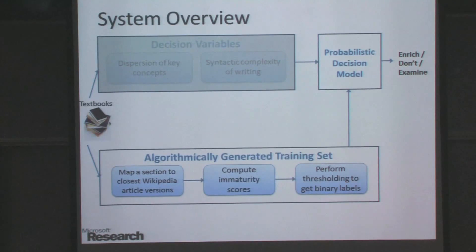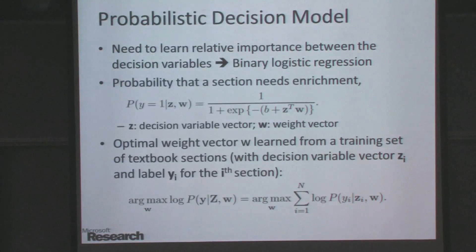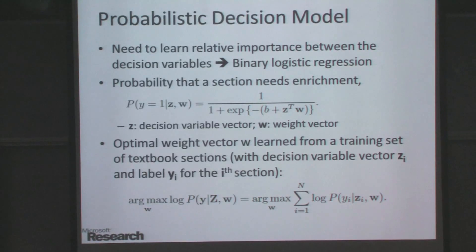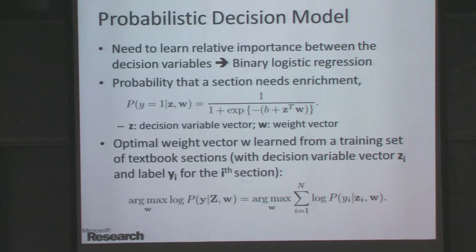Given these two classes of variables, the next question is how to combine them — that's the reason we want to generate training data. We use a standard binary logistic regression to learn the relative importance of these variables. Once we get the probabilities from this regression, we discretize them because we don't want to give too much importance to the actual probabilities, as there are different sources of error on real data.